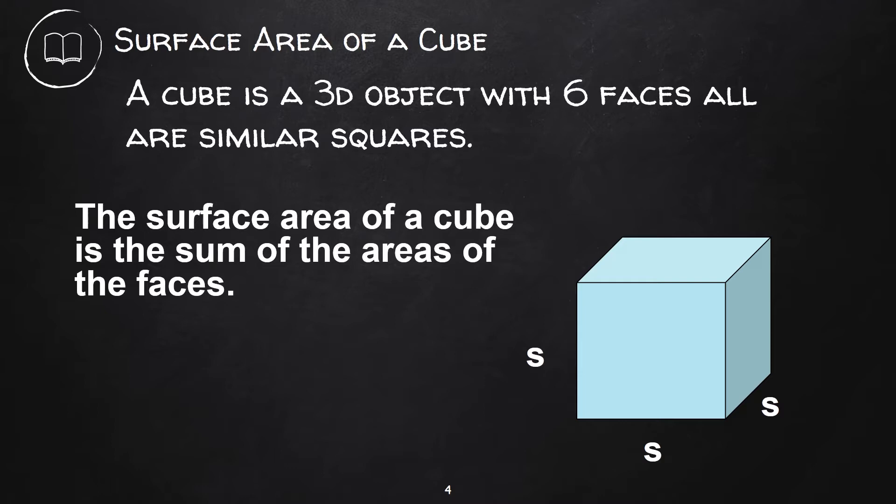For a cube, since there are six faces which are all similar squares, then the surface area of a cube is six times the area of a face that is s-squared, or 6s².